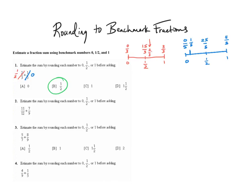In my second example, I have 11 twelfths and 7 ninths. Again, my little number line here: 0, 1 half, 1 whole. This would be 0 twelfths, this would be 12 twelfths, and this would be 6 twelfths. It should be fairly clear that 11 twelfths is very close to 12 twelfths, probably right in here somewhere. So it is very close to 1 whole. I'm going to mark this out and write 1 whole.